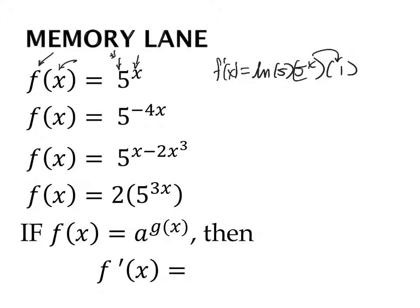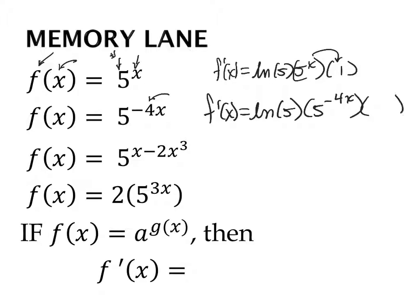Now what happens when you add a coefficient? We get the same process: natural log of the base, keep it exactly the way it is, chain rule out the derivative of the exponent. The derivative of negative 4x with respect to x is negative 4.